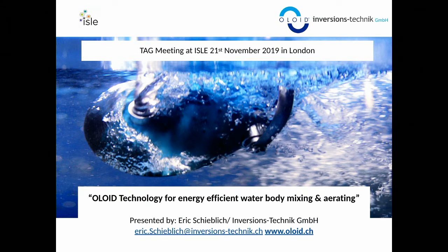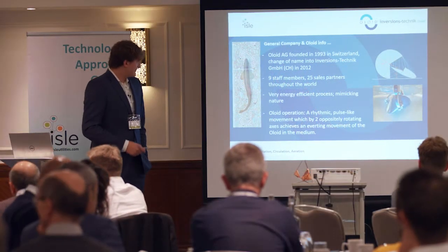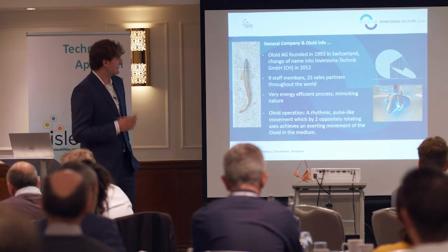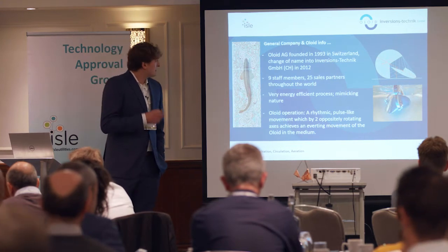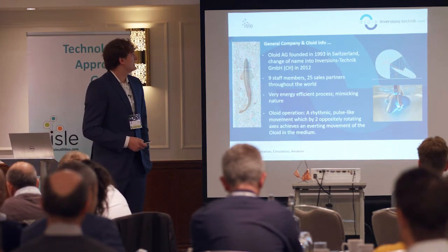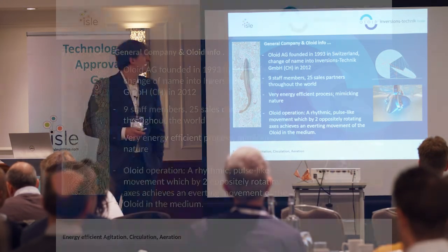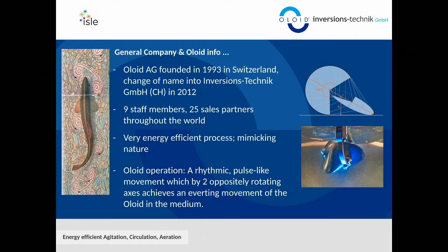The Oloid is a mathematical shape, and you have one in your hands now. The company is based in Switzerland and we have been running the business since 1933. We are a small team of nine people, but we have 25 sales partners around the world, from Australia to Spain, and also Mexico and the US.